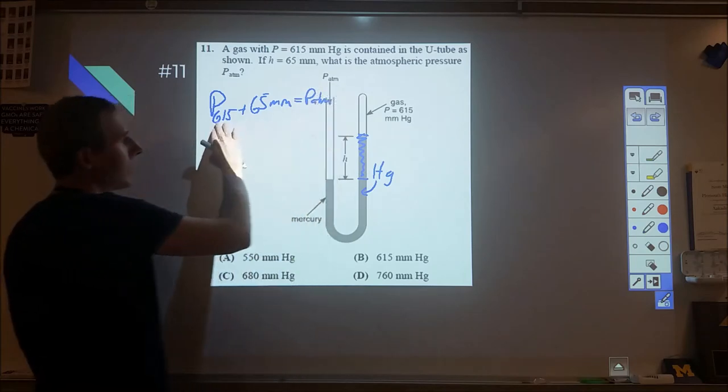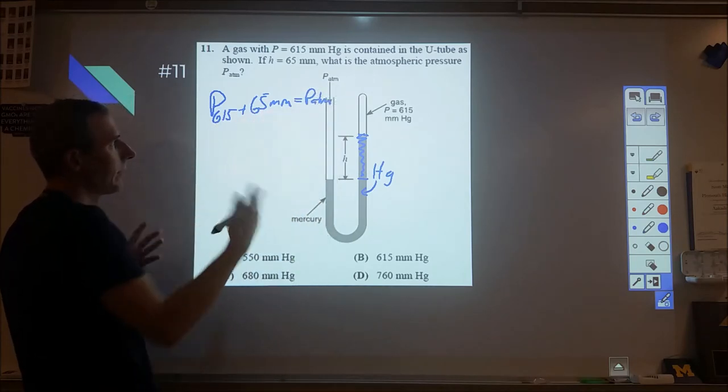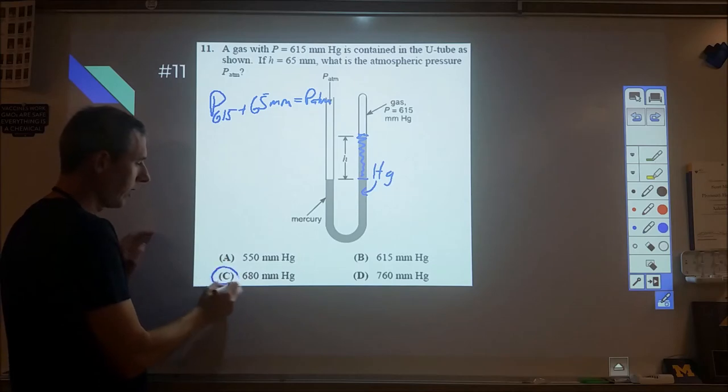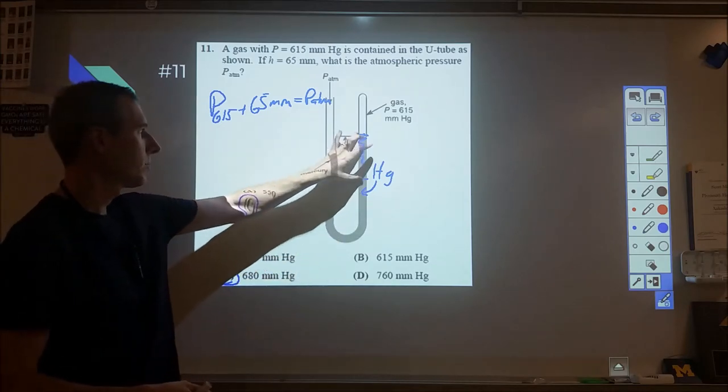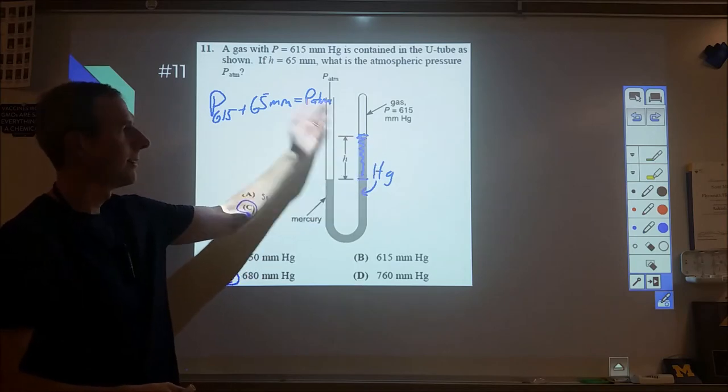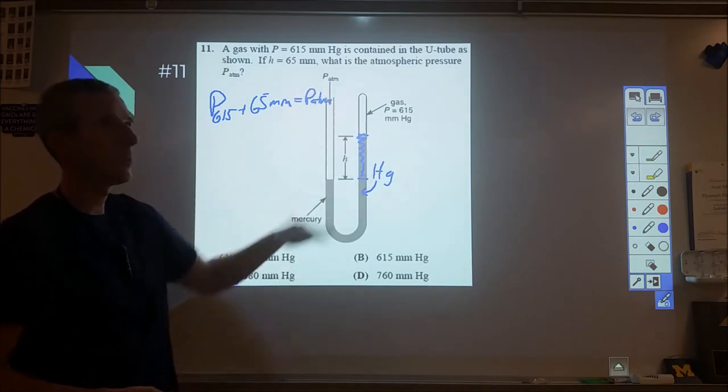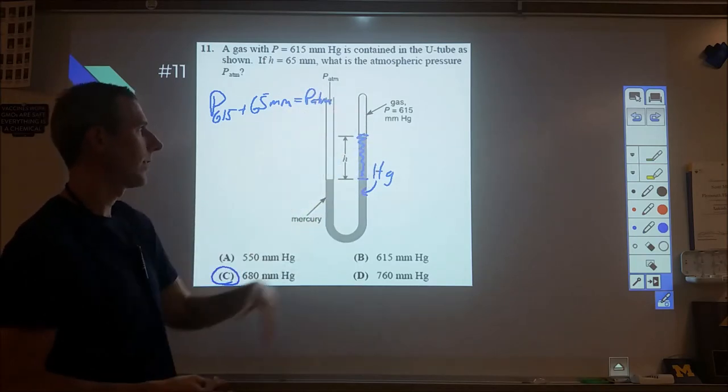So in that case we have 615 plus the 65 to get 680 millimeters of mercury, and therefore C is your correct answer. Really honestly, you're going to be doing some kind of subtraction or addition of this amount, and you just got to kind of determine which side is winning. This side's winning by 65, add 65.